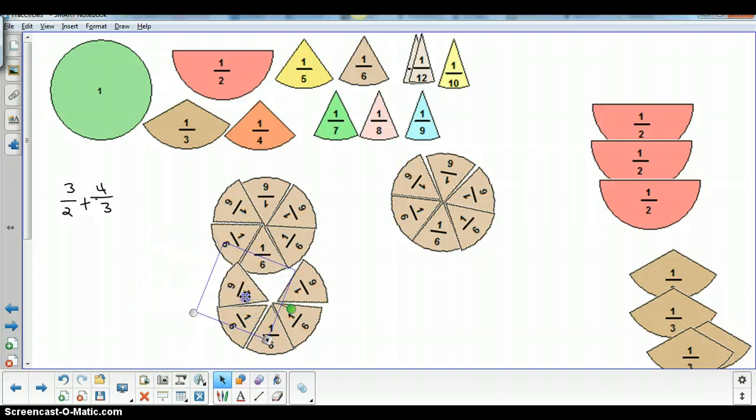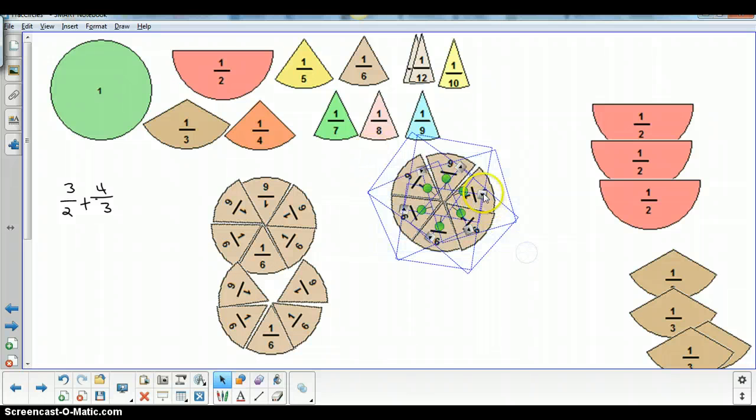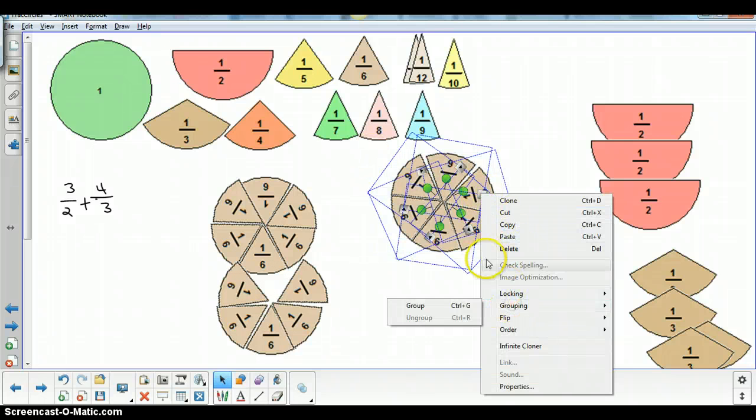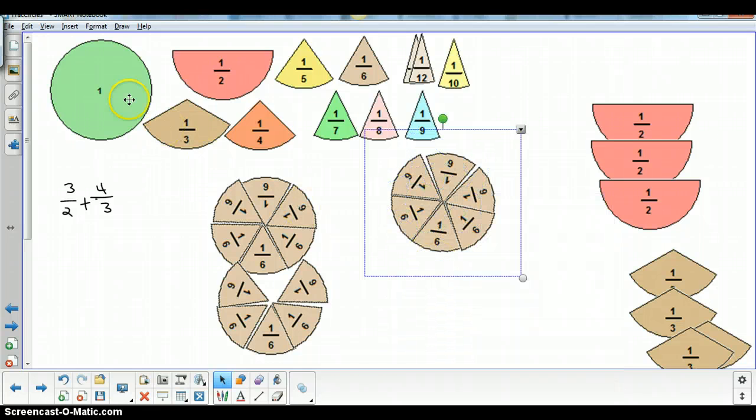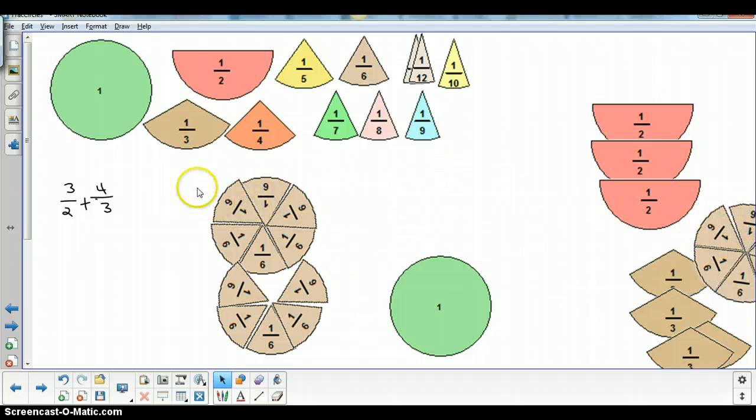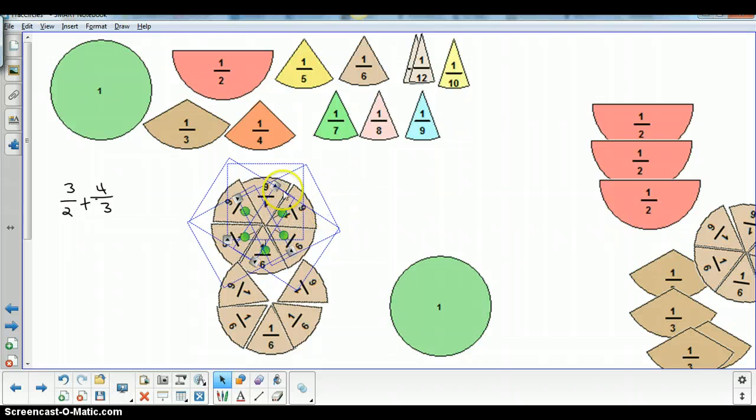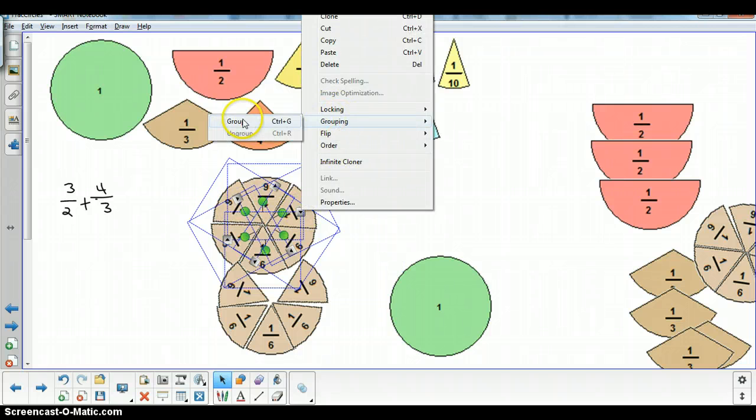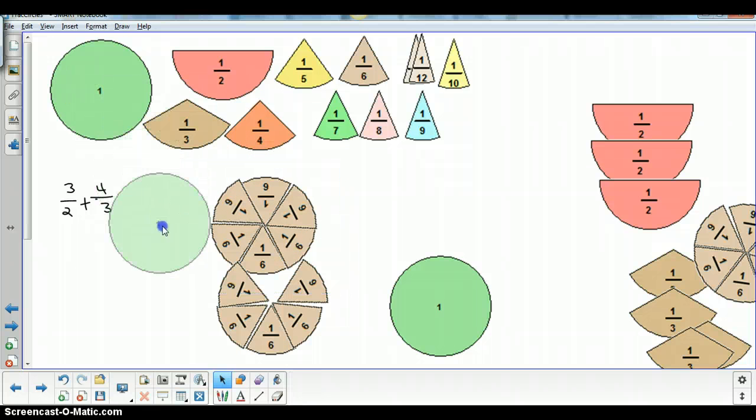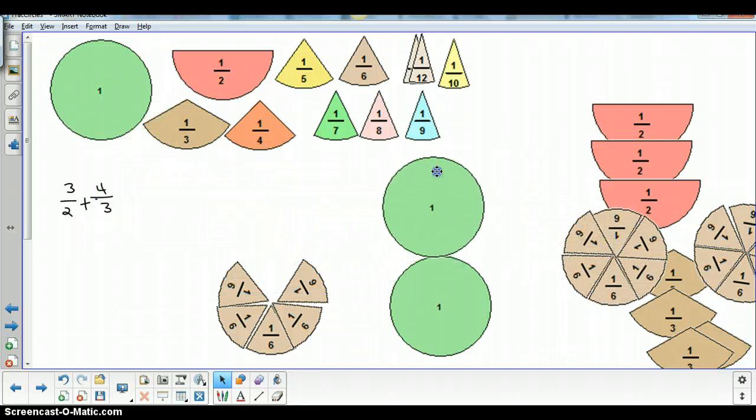Okay, so now what I have found is I have these two wholes. This one's a whole. So we're going to exchange this for one whole and drag that out of the way. And this is also a whole, so we're going to exchange that for one whole. And these are individual pieces.